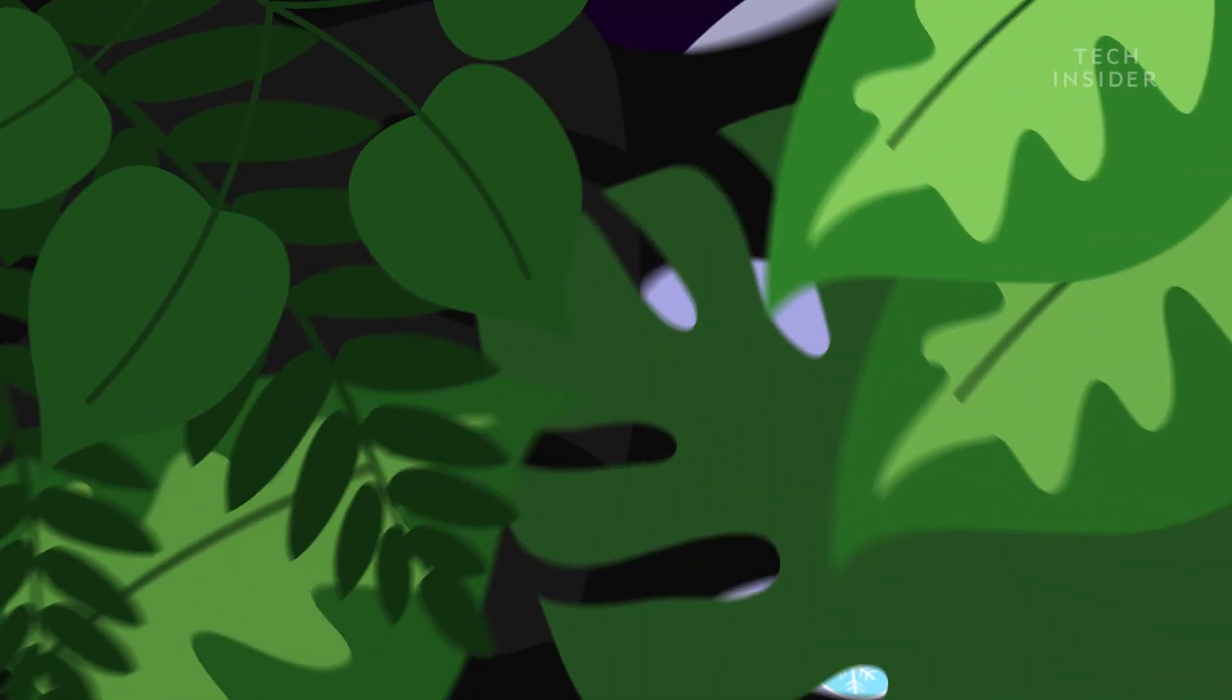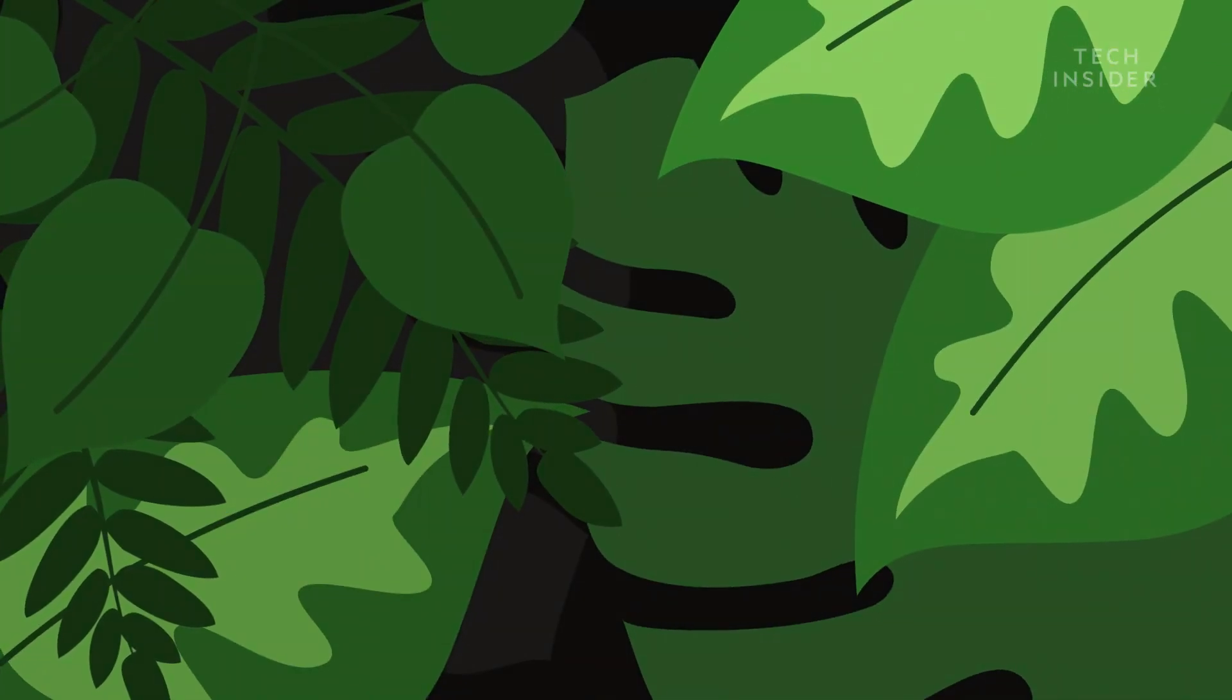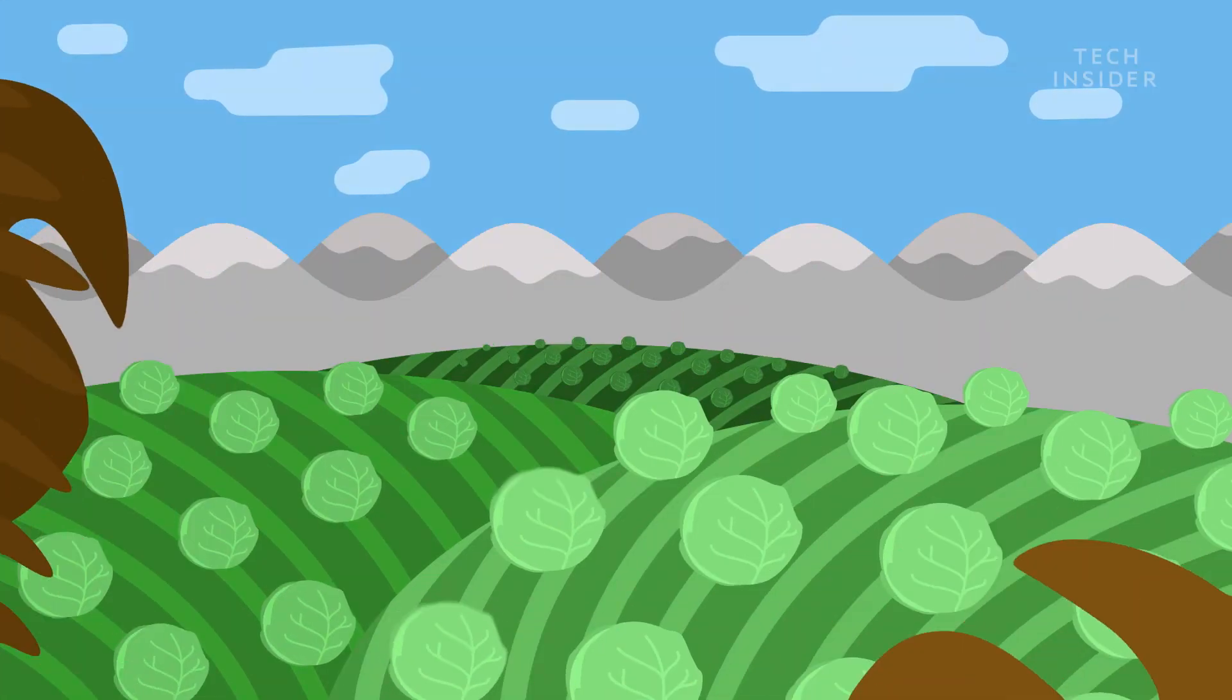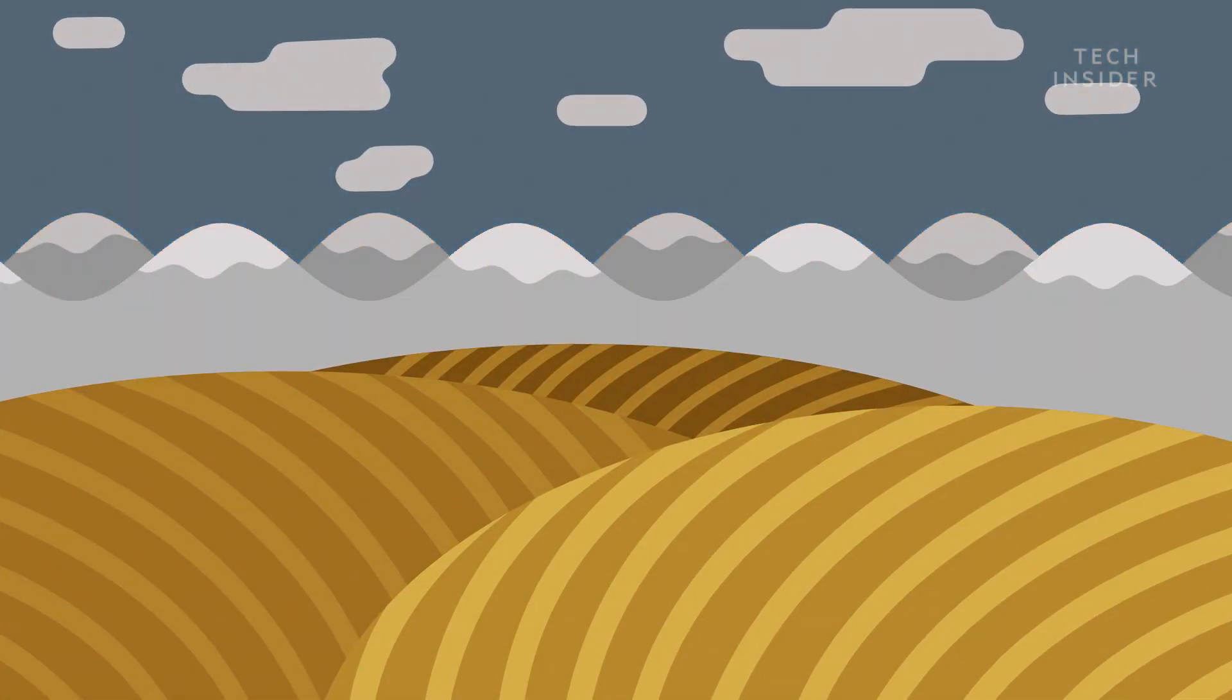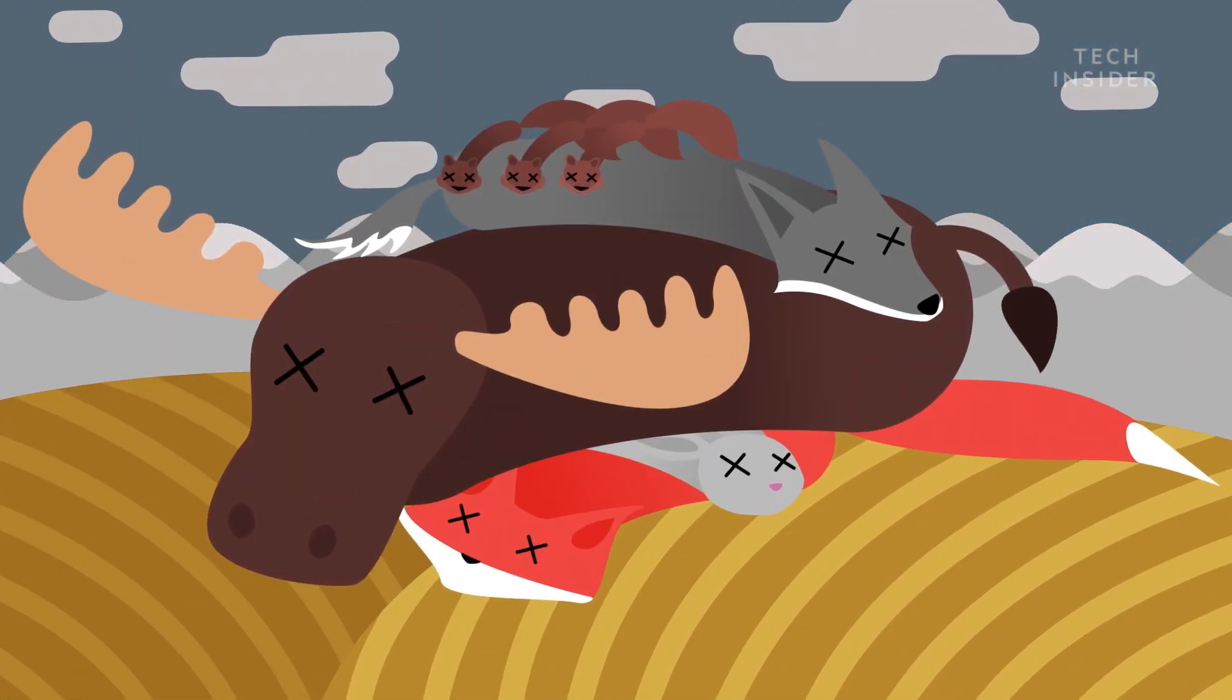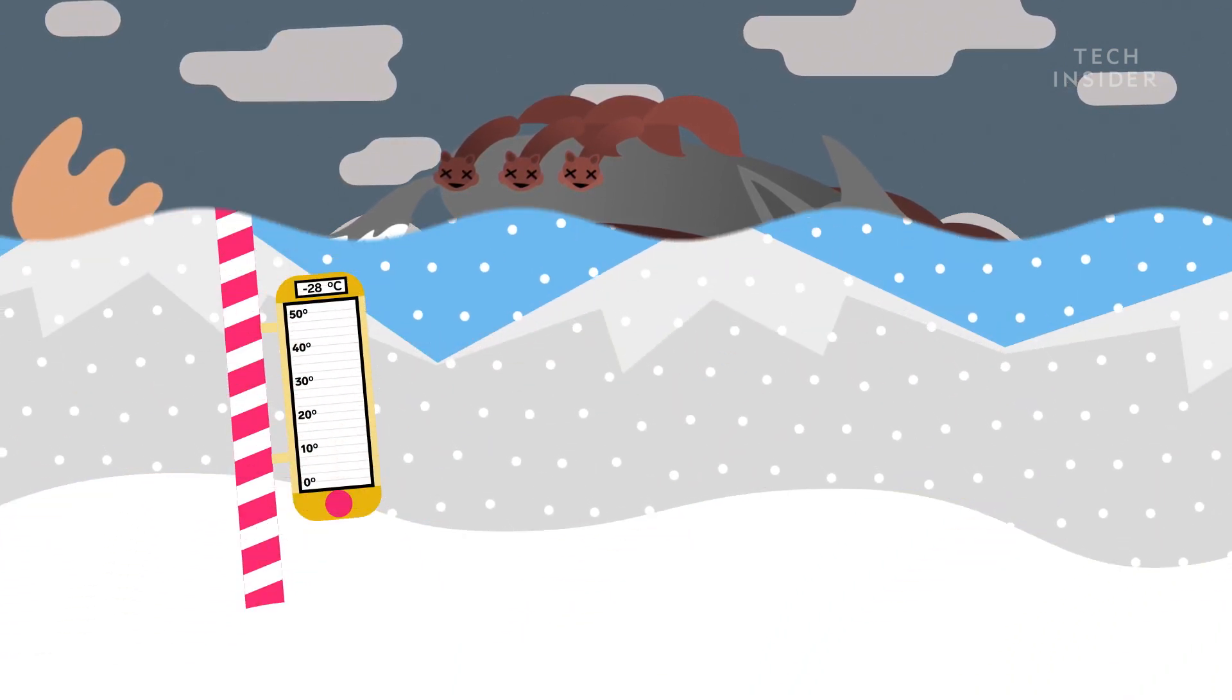And all those thriving plants? They'd die from a lack of sunlight. Agriculture would collapse as ecosystems crumble and mass extinctions pile up. And there would be even more floods.